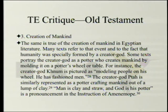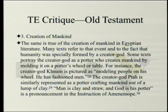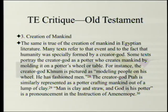Creation of mankind: many texts refer to the fact that humanity was specially formed by a Creator God. Some texts portray the Creator God as a potter who creates mankind by molding it on a potter's wheel or table. The Creator God Khnum is pictured as modeling people on his wheel. The Creator God Ptah is similarly represented as a potter crafting mankind out of a lump of clay. 'Man is clay and straw, and God is his potter' is the pronouncement in the Instruction of Amenemope.